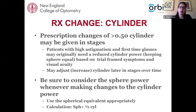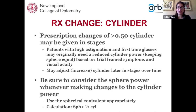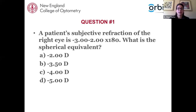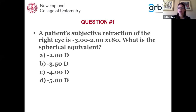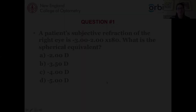You also want to make sure you're taking into consideration the sphere power if you're making changes to the cylindrical power while maintaining the spherical equivalent. The calculation is: take the sphere and add half the cylindrical power of the change you're making. For example: a patient's subjective refraction of the right eye is -3.00 -2.00 x180. What is the spherical equivalent? The answer is -4.00: sphere plus half the cylinder (-3.00 + -1.00 = -4.00).